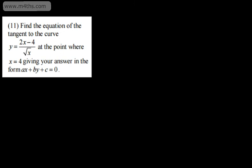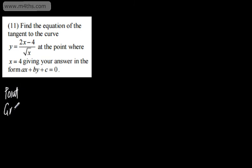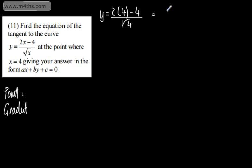In question 11, we're asked to find the equation of a tangent to the curve y = (2x - 4) over root x at the point where x = 4, giving the answer in the form ax + by + c = 0. The first thing we need to do is find a point and a gradient. Substituting x = 4: y = (2 lots of 4 minus 4) over root 4, which is 8 minus 4 over 2, giving a y-coordinate of 2. So we've got the point (4, 2).